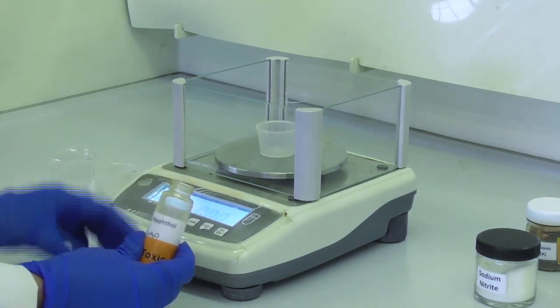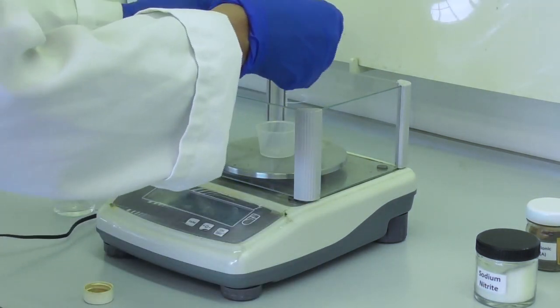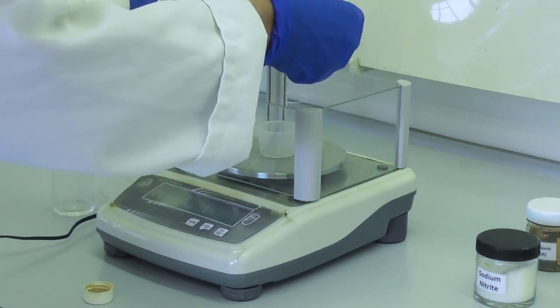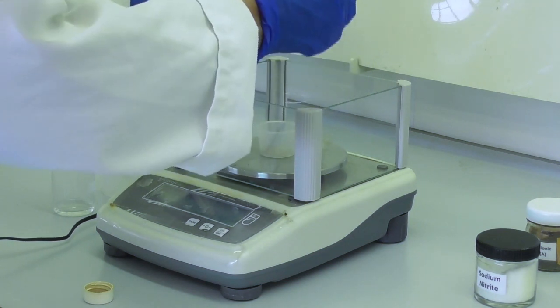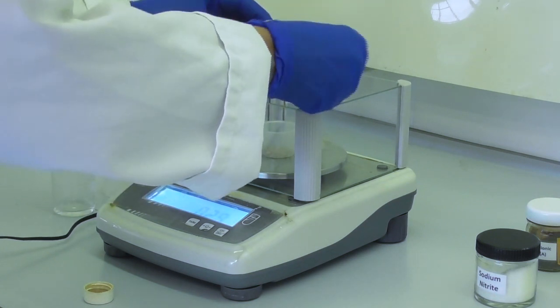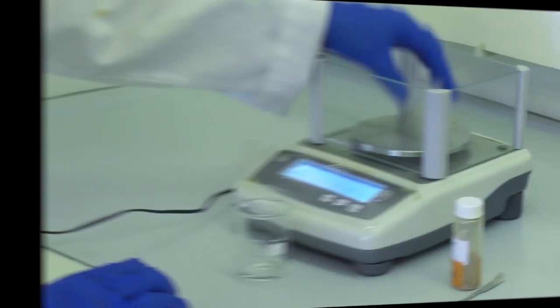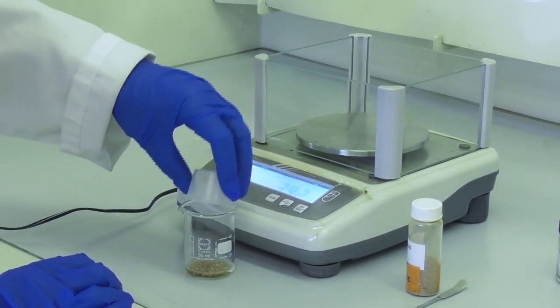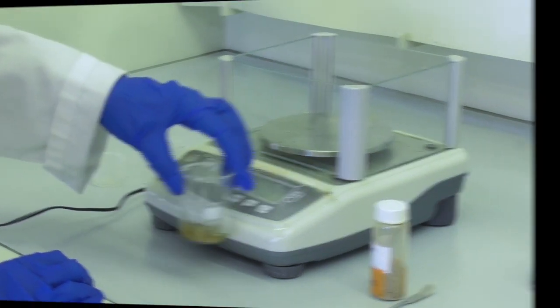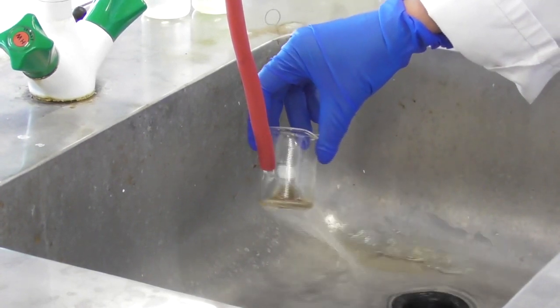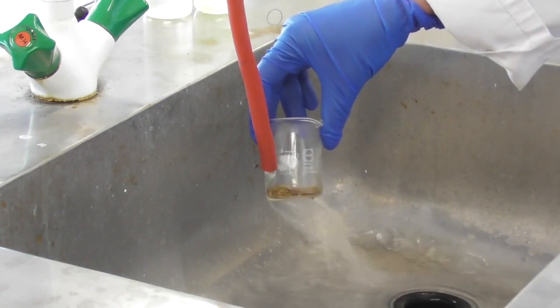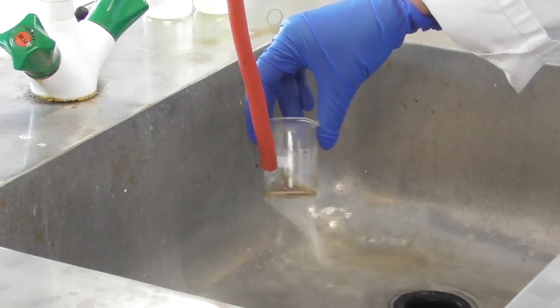In another weighing bottle I weigh out 0.40 g of 2-naphthol. I add this into my sodium hydroxide solution and give it a good swirl. As it doesn't dissolve easily I hold the beaker under a hot water tap while swirling to help the naphthol dissolve in the sodium hydroxide solution.